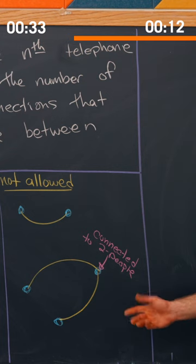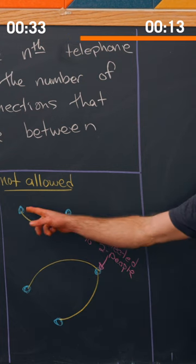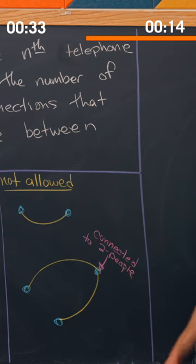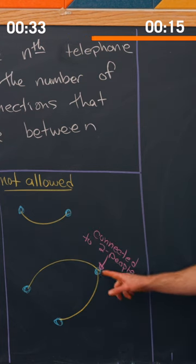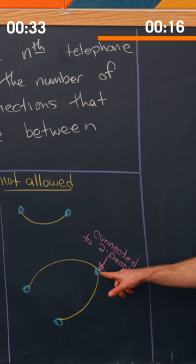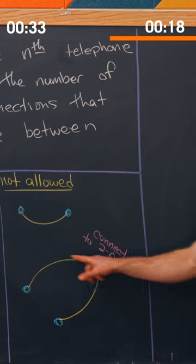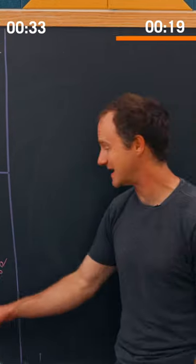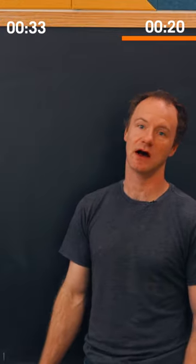Here we've got five people again. These two are connected, but then this person right here is connected to two people — that is not allowed.